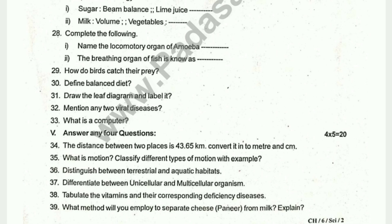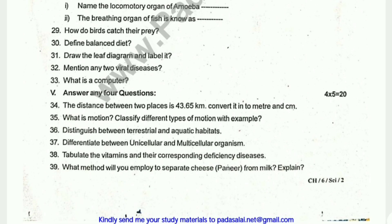6 marks. One hour square — the distance is 43.65 km. Quarterly back to 1m. What is motion? Classify different types of motion. Distinguish between terrestrial and aquatic habitats. Difference between unicellular and multicellular organisms. Tabulate the vitamins and corresponding deficiency diseases. What matter will you employ to separate cheese from milk?